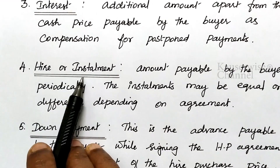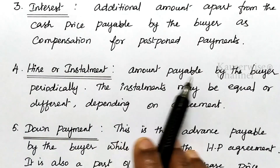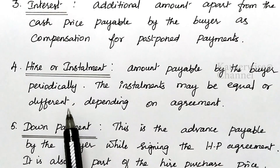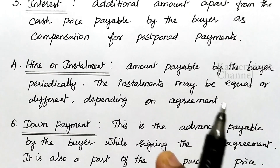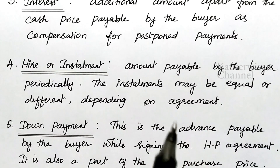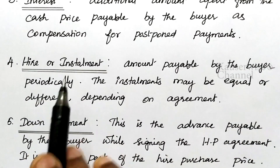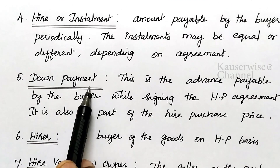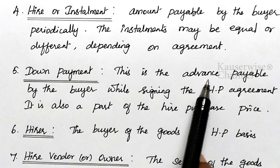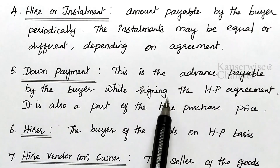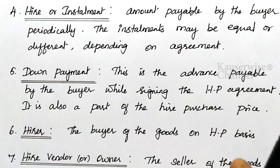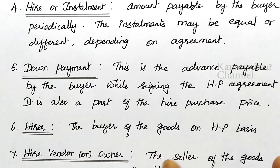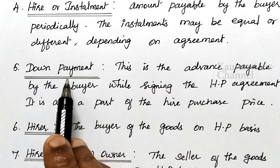The next one is hire charges or installment. This is the amount payable by the buyer periodically. The installment may be equal or different depending on the agreement — every month or every year, the buyer will make payment to the seller. That amount is called hire charges or installment. And the next one is down payment — this is the advance payable by the buyer while signing the hire purchase agreement. At the time of entering into the agreement, the buyer has to pay some initial amount, called down payment. It is also a part of the hire purchase price.